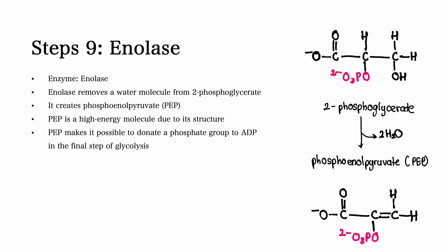Step number nine. The main enzyme involved in step number nine is called enolase. Here, enolase removes a water molecule from 2-phosphoglycerate. This creates phosphoenolpyruvate, also called PEP. Phosphoenolpyruvate is a high energy molecule due to its structure. This makes it ready to donate a phosphate group to ADP in the final step of glycolysis.